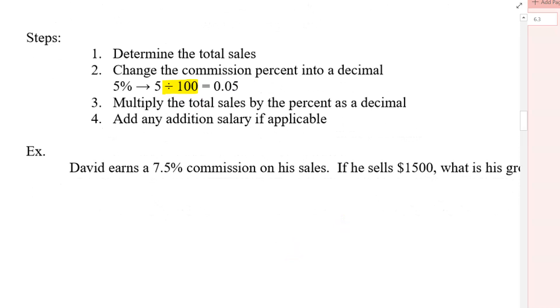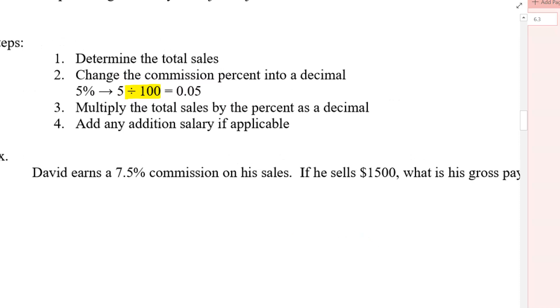So let's take a look here. We've got an example. David earns a 7.5% commission on his sales. If he sells $1,500, what is his gross pay? So I'm going to just take it real slow here. So step one was determine the total sales. So the total sales, that's the $1,500, right?